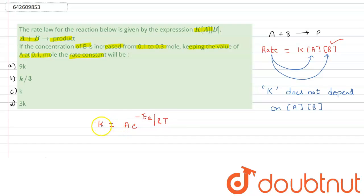K is also dependent on the activation energy, and activation energy depends upon the addition or removal of a catalyst. The value of rate constant K does not depend upon the concentration, so whatever the concentration may be, the value of K will be the same. Since we are keeping the temperature constant and not changing it, just changing the concentration of the reactant molecule cannot change the rate constant value — it will always remain K.